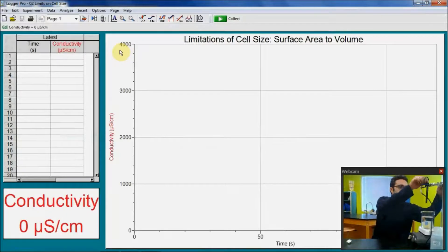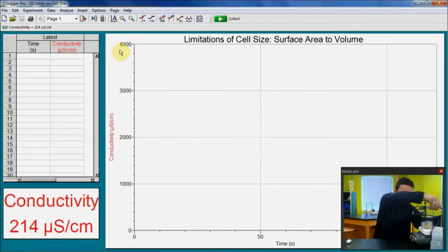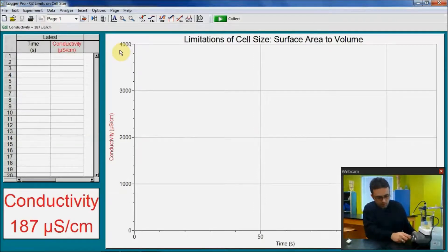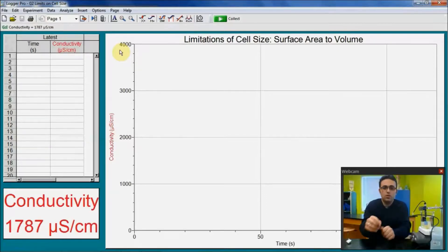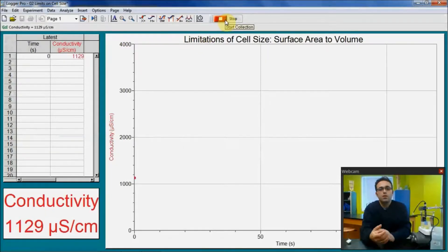While you're submerging the conductivity probe, make sure this little silver piece that collects data is totally submerged in water. And then I start stirring, and then I will start data collection. You can start data collection either by clicking on this collect button or clicking on your space button. It will collect data for two minutes.